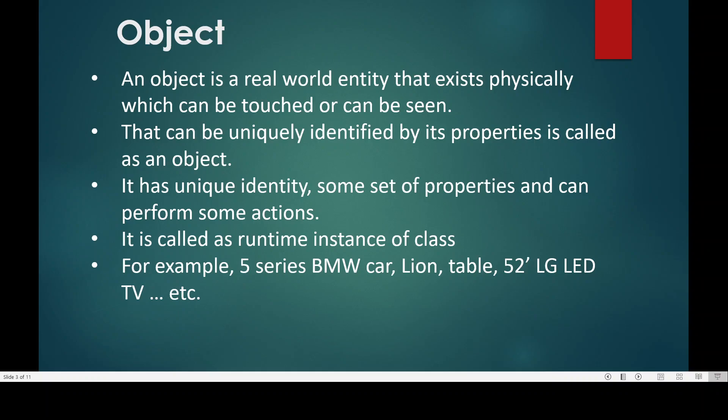Let us understand the object first. An object is a real world entity that exists physically, which can be touched or can be seen. An object is an entity that can be uniquely identified by its properties. For example, there is a BMW car, there is an animal, there is a TV. But you cannot see just 'a TV' — you can see a 52-inch LG LED TV.